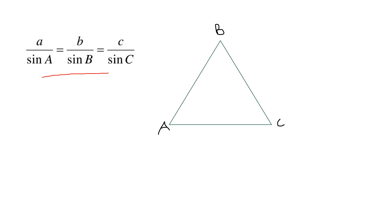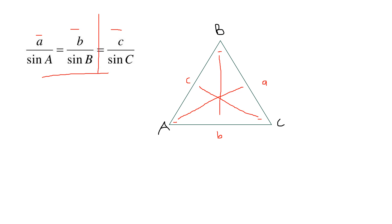This formula is used when you are given a triangle that is not a right-angle triangle. We have angle A, angle B, and angle C, and we know the sum of angles in a triangle must add up to 180°. The side opposite angle A is represented by lowercase a, the side opposite angle B by lowercase b, and the side opposite angle C by lowercase c. The formula equates a/sinA = b/sinB = c/sinC. You only need to equate two pairs at a time depending on the given information.